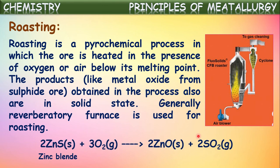For example, zinc blende is one of the ores of zinc. When it is heated in a reverberatory furnace in the presence of oxygen, it converts into zinc oxide.